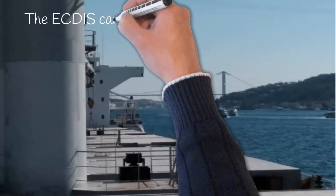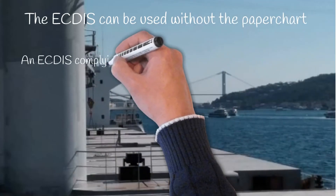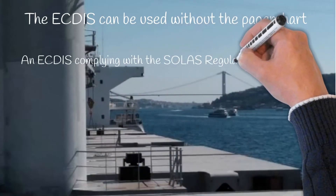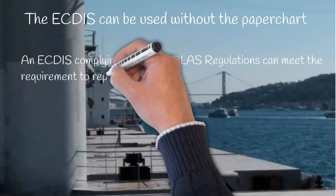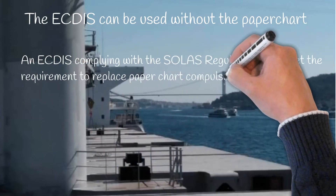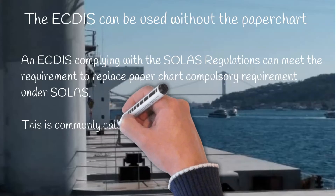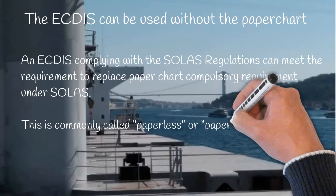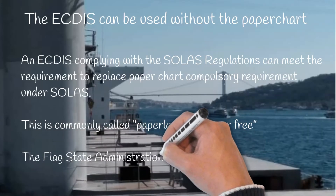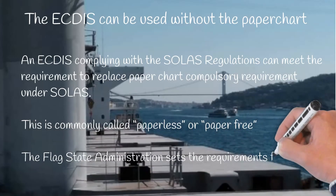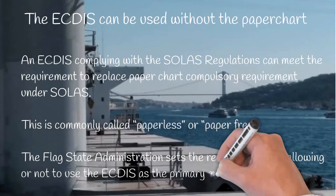The ECTIS can be used without the paper chart. An ECTIS complying with the SOLAS Regulations can meet the requirement to replace the paper chart compulsory requirement under SOLAS. This is commonly called paperless or paper-free. The Flag State Administration sets the requirements for allowing or not allowing ECTIS to be used as a primary means of navigation.